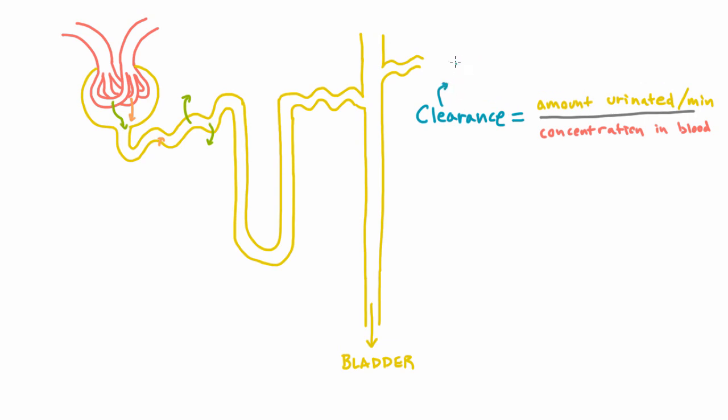So clearance ends up telling you the volume of blood that's cleaned of a substance per minute. And the idea is that if the kidney is really good at getting rid of a certain waste, it's going to have a high clearance for that waste, meaning that every minute it cleans out a large volume of blood of that waste.